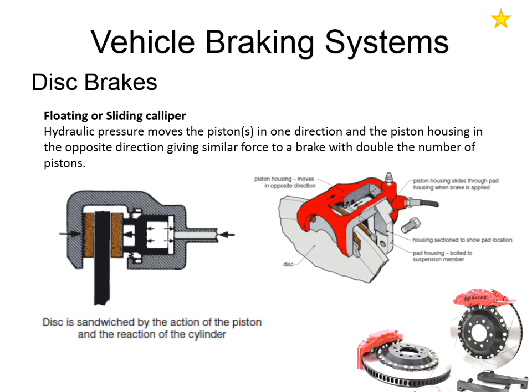Because the caliper housing isn't rigidly mounted to the anchor bracket, the caliper can slide across, pulling the other brake pad into contact with the brake disc on the other side. This double action of the piston and caliper body working in unison means the braking force of a single-piston floating caliper is very similar to that of a caliper with double the number of pistons.